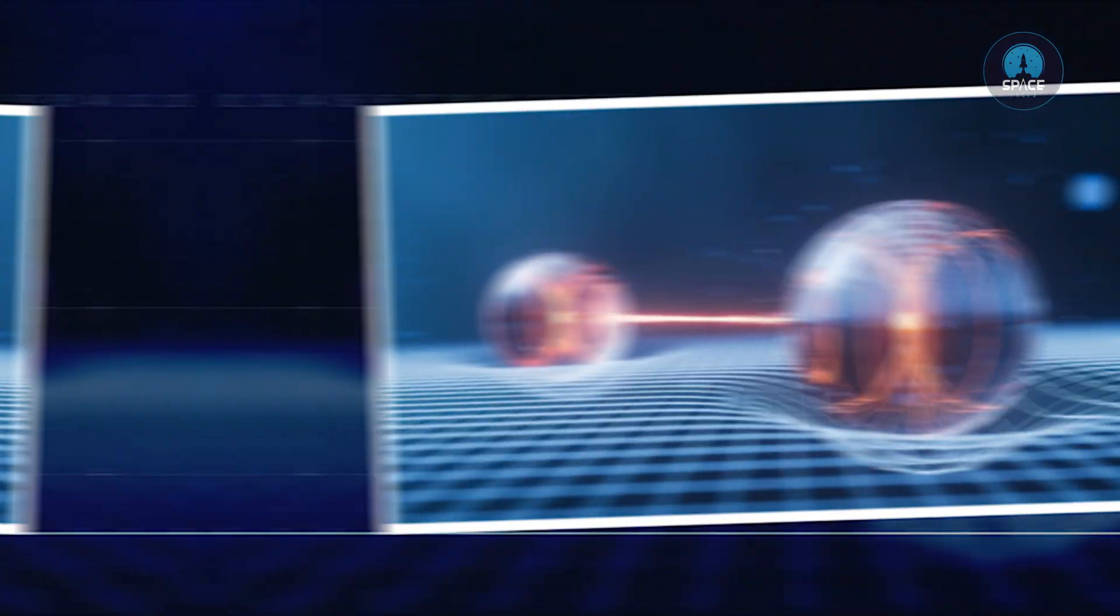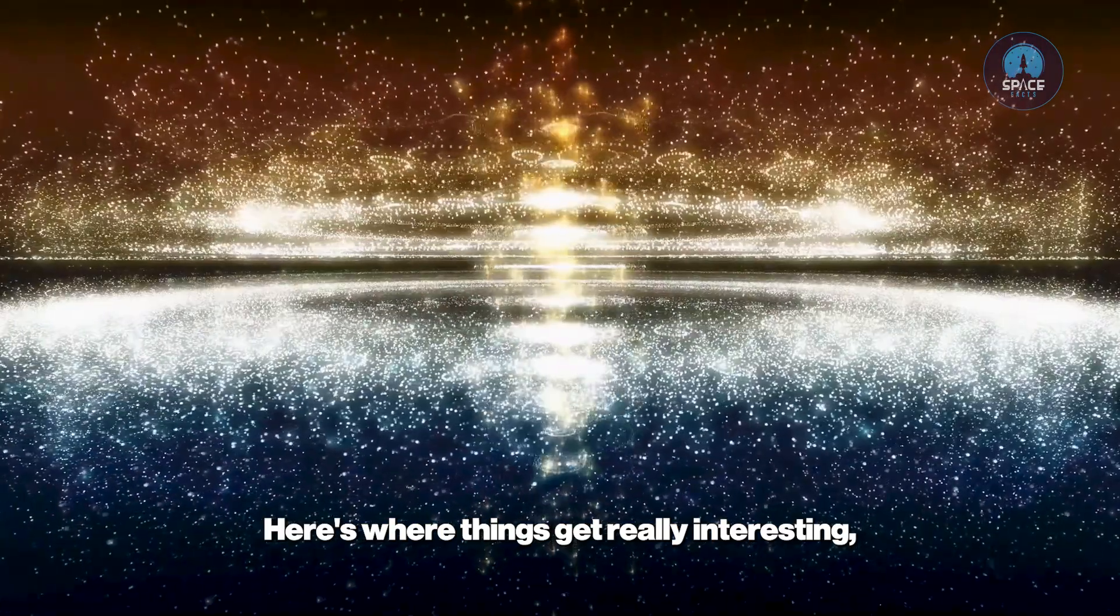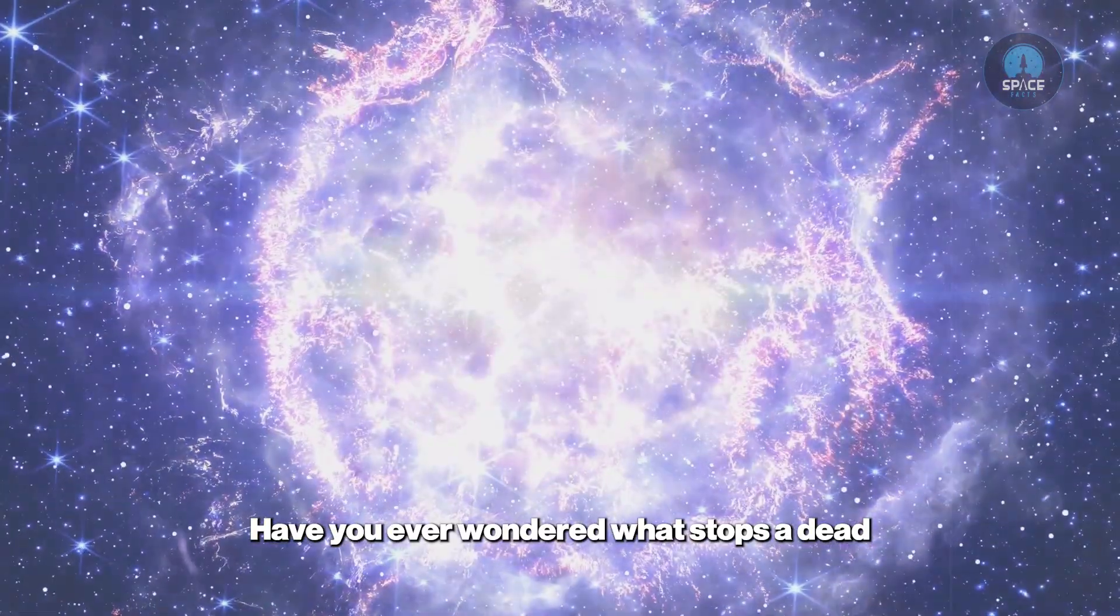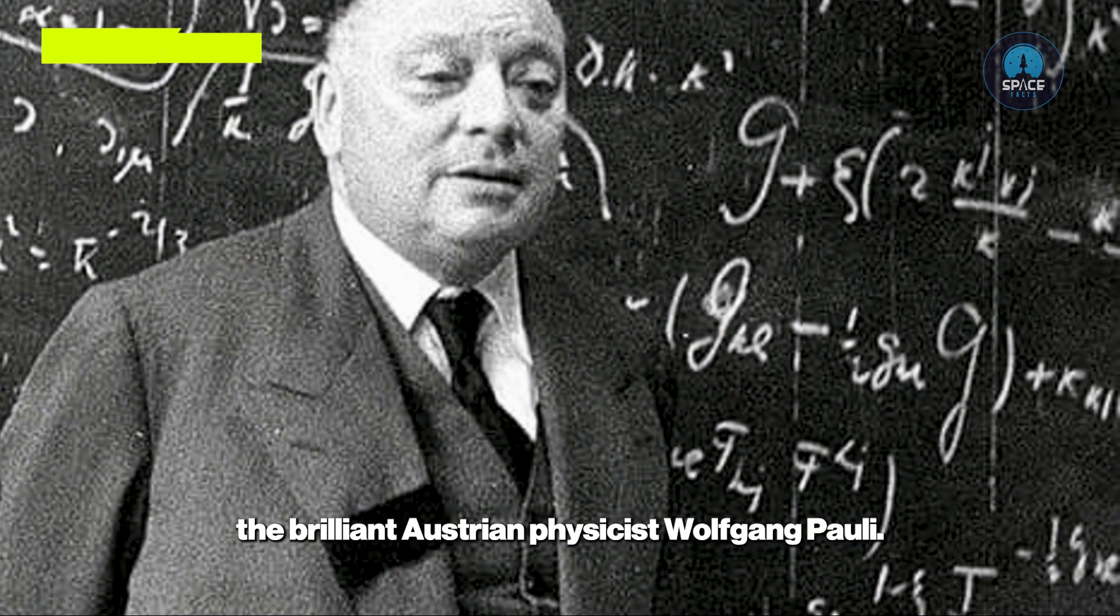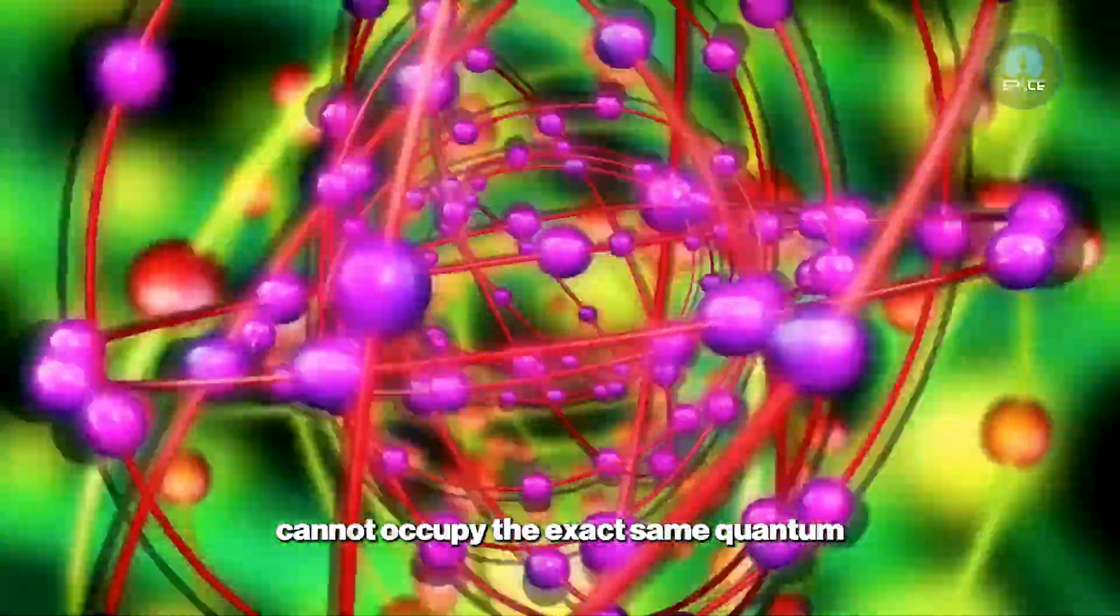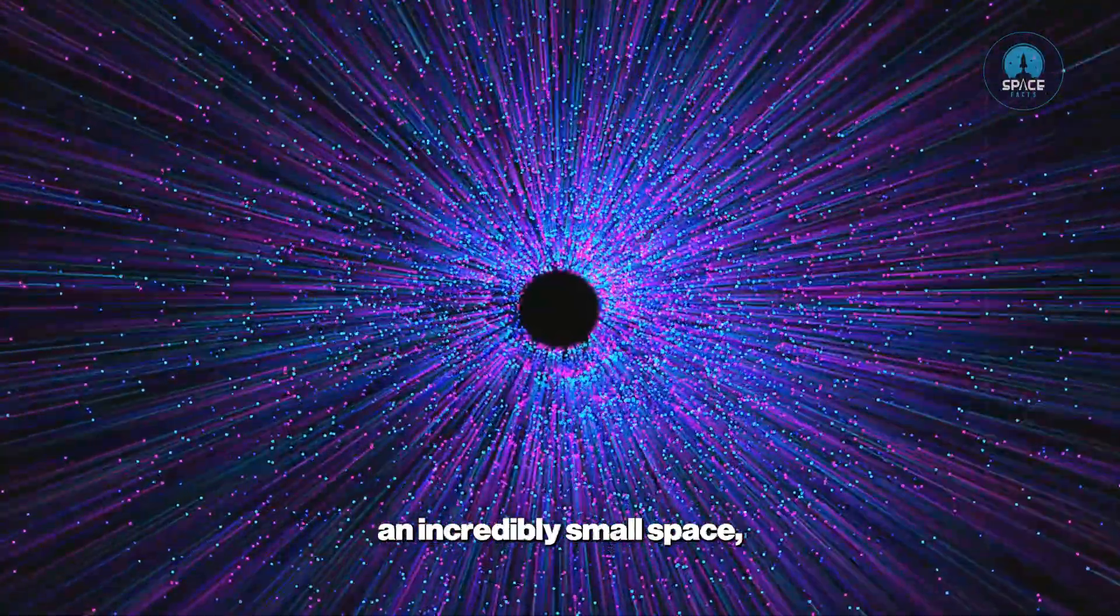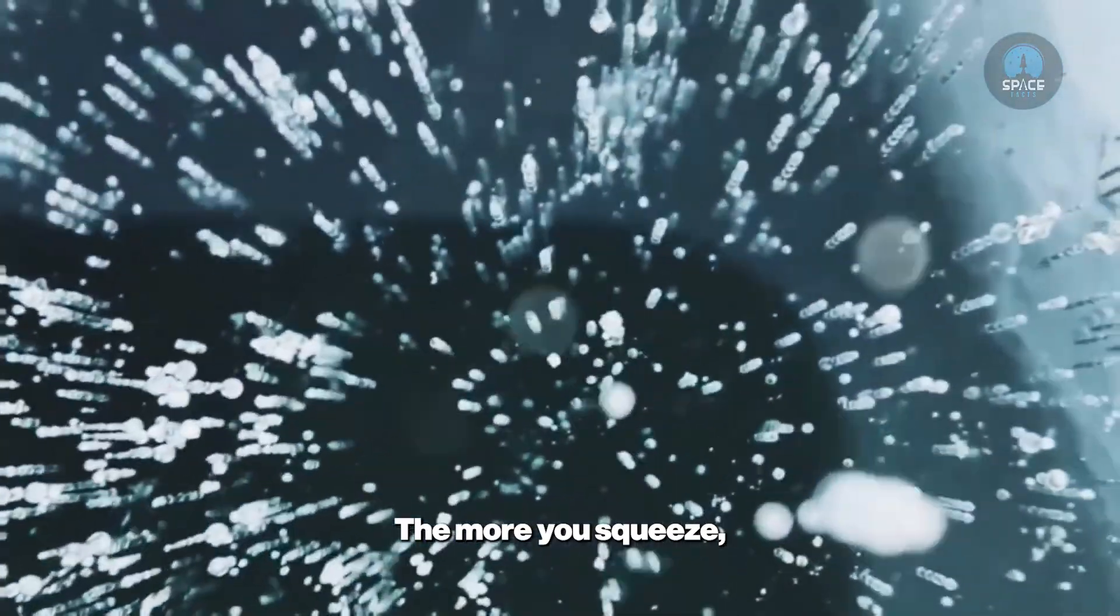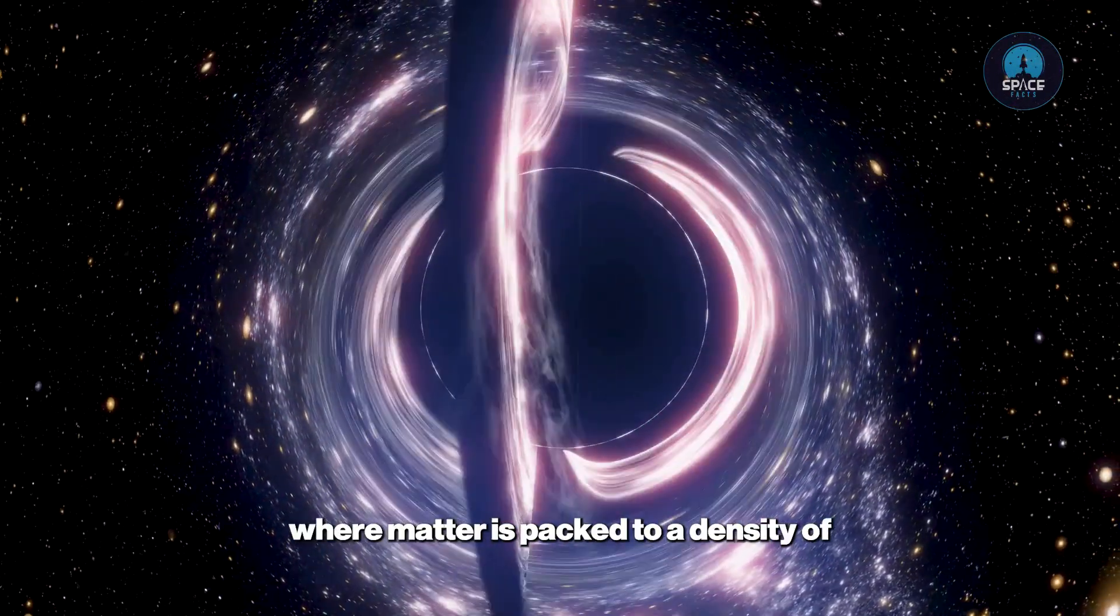Quantum mechanics and degeneracy pressure: Here's where things get really interesting, and it hinges on a core principle of quantum mechanics. Have you ever wondered what stops a dead star from collapsing forever? The answer lies in a rule established by the brilliant Austrian physicist Wolfgang Pauli. His exclusion principle states that identical particles, like electrons, cannot occupy the exact same quantum state at the same time. When gravity tries to crush matter into an incredibly small space, this principle creates a powerful outward push known as degeneracy pressure. The more you squeeze, the harder the particles push back.